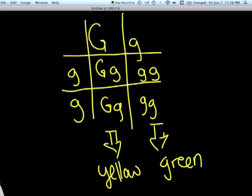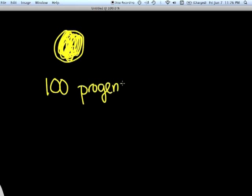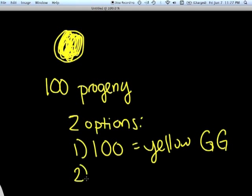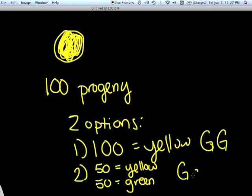And so, let's say Mendel did this test cross with a particular yellow pea. And in one test cross, let's say there were 100 progeny. We have two options. Perhaps Mendel found that all 100 were yellow. Then we know the parent's genotype was big G big G. However, if 50 of the progeny were yellow and 50 were green, then the parent had to have been a heterozygote.